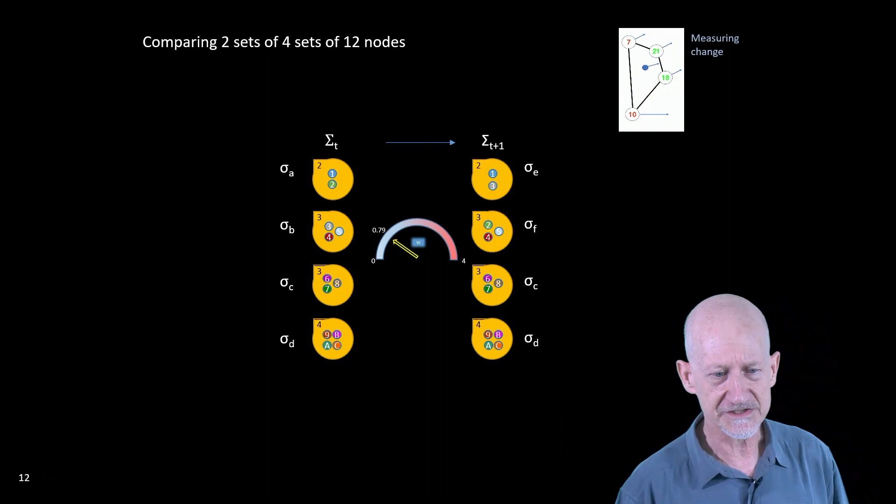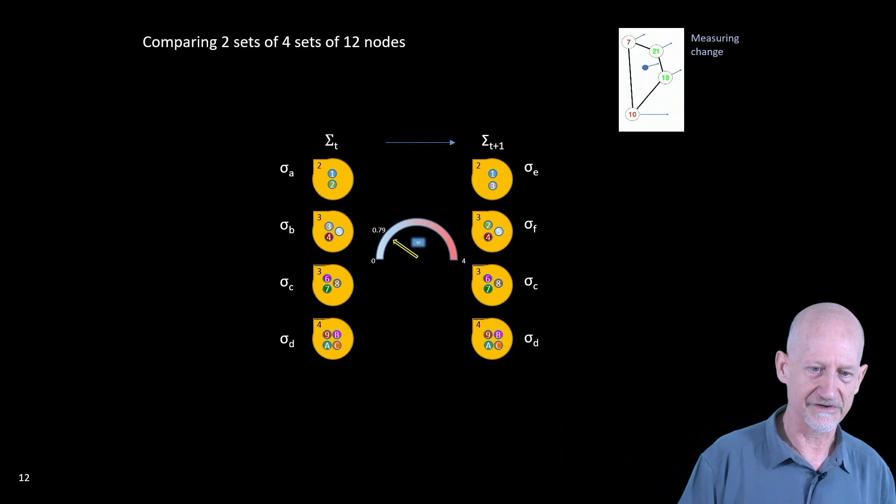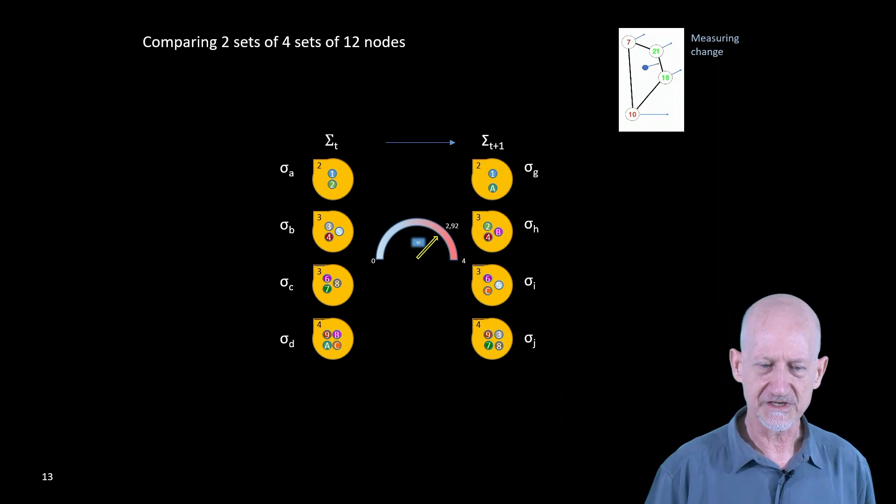But if, for instance, two players change simplices, player number two and number three, then there is additional information that is required to go from t to t plus one, and we register that by using this metric we call the variation of information.